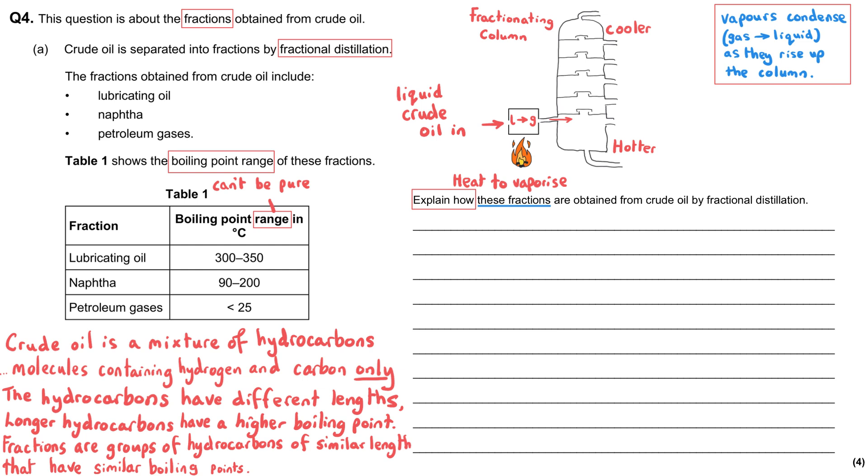Now, the subtlety for this question is it asks how these fractions are obtained from crude oil by fractional distillation. So we need to link it to these three named fractions. Since the vapors are going to condense as they rise up, we need to think about where they will condense.